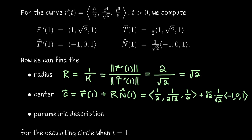The √2 and 1/√2 factors cancel out nicely. So we compute: 1/2 + (-1) = -1/2 for the x-component; 1/(2√2) + 0 = 1/(2√2) for the y-component; and 1/6 + 1 = 1/6 + 6/6 = 7/6 for the z-component. So the center is the vector (-1/2, 1/(2√2), 7/6).